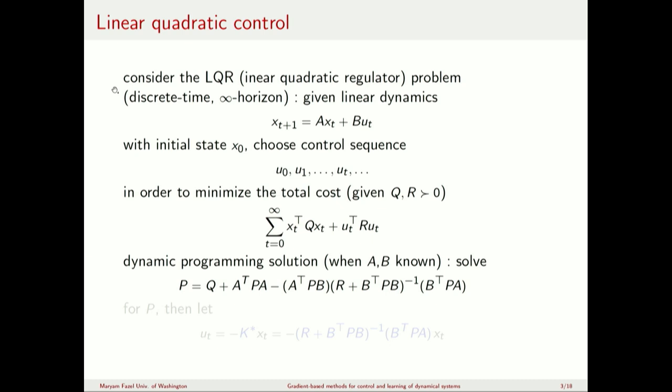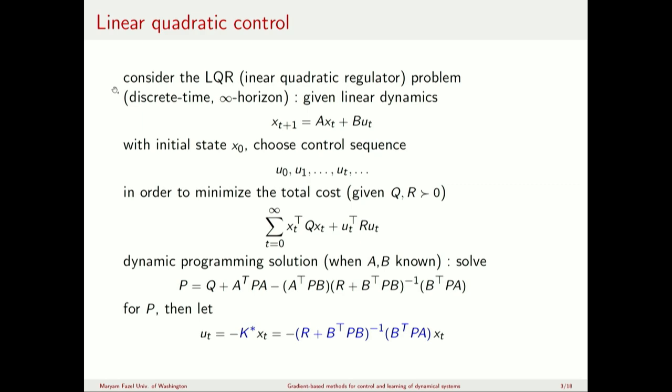This problem is well studied. If you know the A and B matrices, the solution is given by solving a discrete algebraic Riccati equation, which requires solving for an auxiliary matrix P satisfying this equation. The equation is nonlinear — P appears both on this side and inside an inverse — but it can be solved by linear algebra methods. Once you find P, you obtain the optimal control by plugging into this formula.